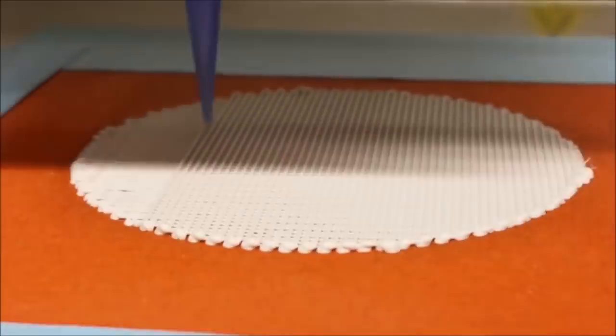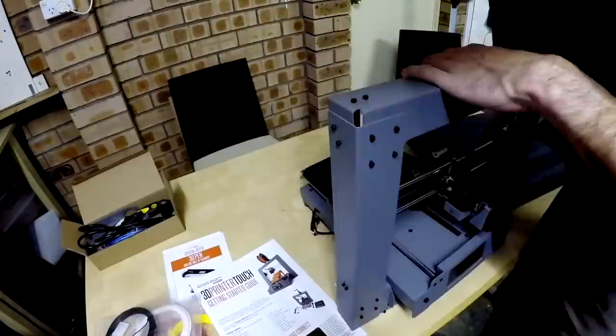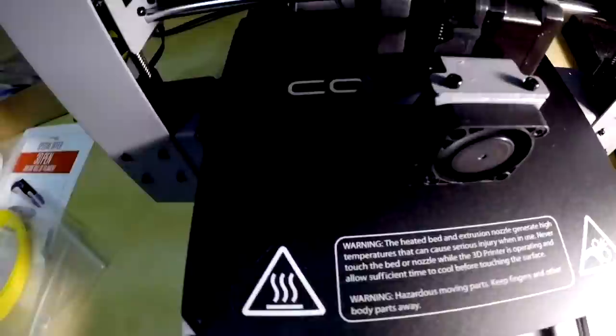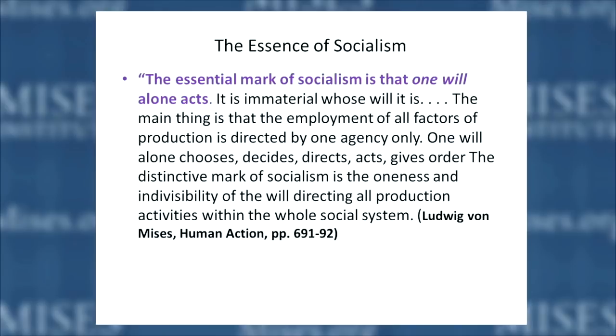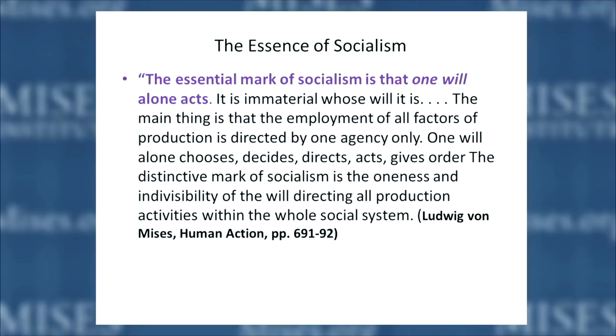That would apply if you're using humans to make decisions for other humans in your idea of central planning. What Mises pointed out was that the problem of socialism was the problem of one will acting — one person determining how resources were going to be allocated. If one person owned all those resources, there could not be prices. The essential mark of socialism is that one will alone acts. It's immaterial whose will it is — it could be somebody very benevolent, very smart. It doesn't matter. The main thing is that the employment of all factors of production is directed by one agency only. One alone chooses, directs, and so on. And that is the problem.